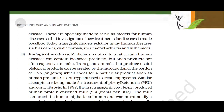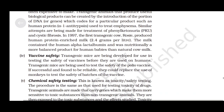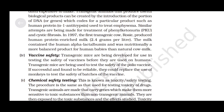Third, biological products. Medicines required to treat certain human diseases often contain biological products that are expensive to make. Transgenic animals that produce useful biological products can be created by introduction of the portion of DNA or genes that code for a particular product, such as human protein alpha-1-antitrypsin, used to treat emphysema. Similar attempts are being made for treatment of phenylketonuria (PKU) and cystic fibrosis. In 1997, the first transgenic cow, Rosie, produced human protein-enriched milk at 2.4 grams per litre. The milk contained human alpha-lactalbumin and was nutritionally a more balanced product for human babies than natural cow's milk.